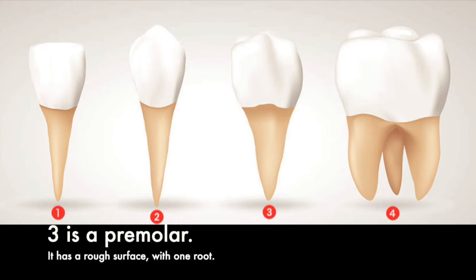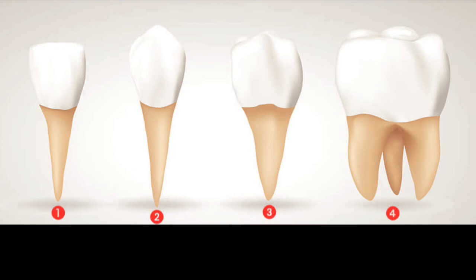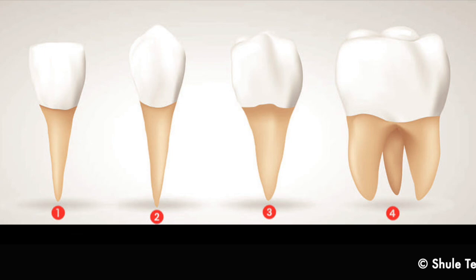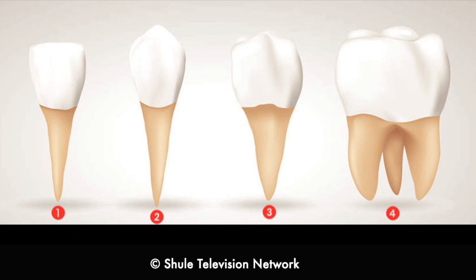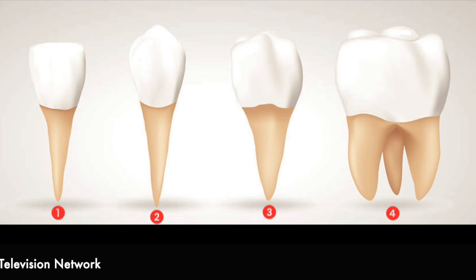3 is a premolar — it has a rough surface with one root. 4 is a molar — it has a rough surface with three roots.